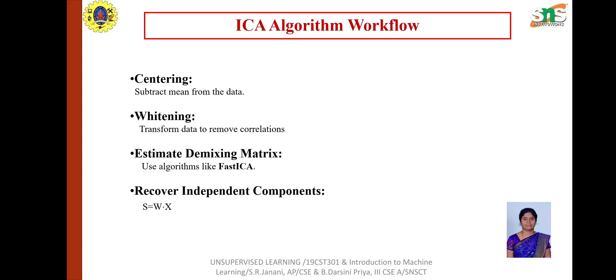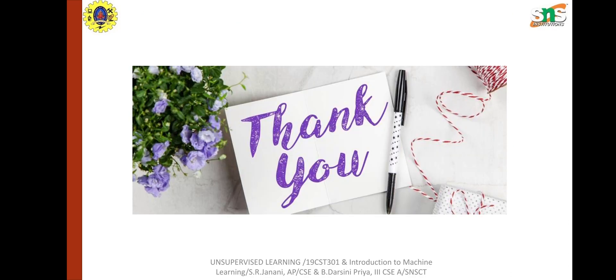The ICA algorithm steps are: first, centering - separate mean from the data. Next, whitening - transform data to remove correlation. Next, estimate the demixing matrix using algorithms like FastICA. Finally, recover independent components using S = W·X.